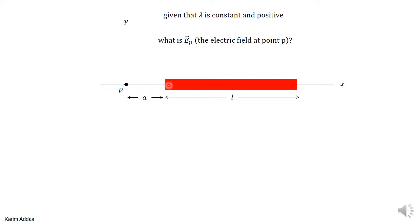In this case we have a line of charge. The line has a length L and it's positive charge and lambda is constant. So the charge per unit length is the same everywhere, it's uniform.